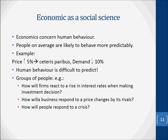Even so, there are still things about human behavior that are very difficult to predict, even when we are talking about whole groups of people. How, for example, will firms react to a rise in interest rates when making their investment decisions? This will depend on things such as the state of business confidence, something that is notoriously difficult to predict. How will a business respond to price changes by its rivals? This will often depend on how it thinks its rivals themselves will react to its own response. How will people respond to a crisis, such as the global banking and credit crisis of 2007? This depended very much on the mood of financial and other companies and individuals. A mood of pessimism can quickly spread, but not to a degree that is easily predictable.